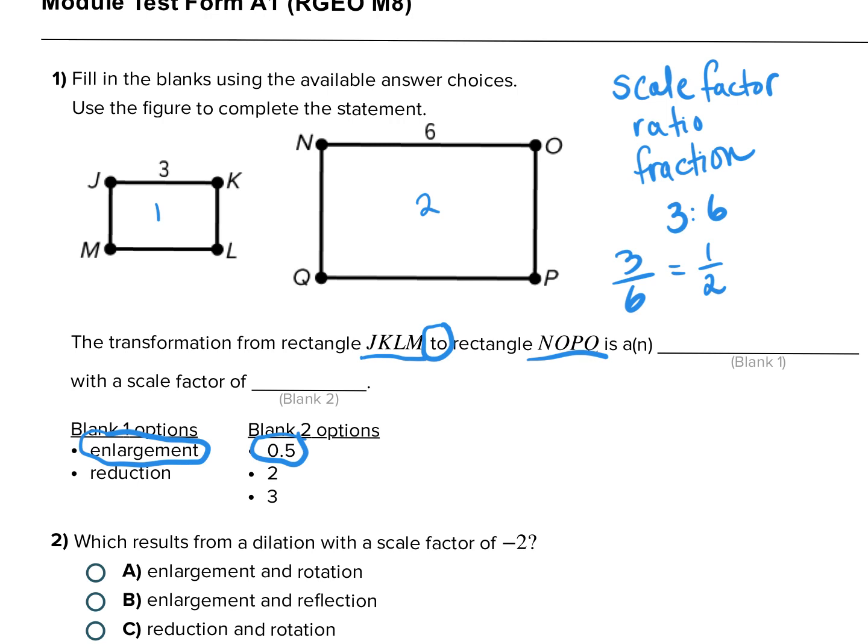Now if the rectangles were reversed, if it said we were going to map NOPQ to JKLM, then my ratio would be six to three, or six over three, which equals two, two to one. And it would have been a reduction. So again, everything is dependent upon the statement. You have to pay attention to what they're asking for.